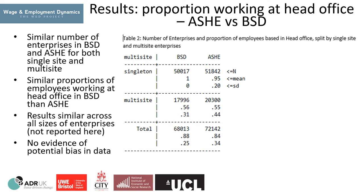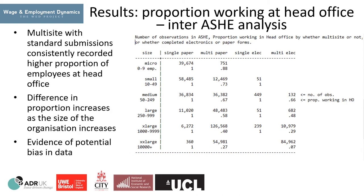In this analysis we are directly comparing data in the ASH and the BSD, focusing on the proportion employed in the head office. We separated the analysis to look at the difference between single-site and multi-site. We note that the proportion of people working in the head office is similar for both single-site and multi-site in the BSD. If there were evidence of bias, we would expect a higher percentage to be employed at the head office in ASH — however we do not find this. We then focused just on the ASH sample, looking at the proportion working at the head office by size of employer across four groups: single-site and multi-site with standard paper submissions, and single-site and multi-site with special electronic arrangements.